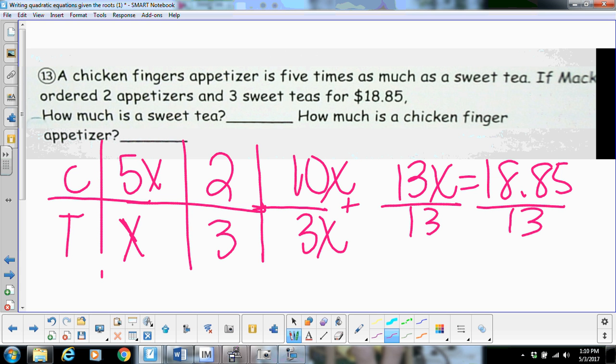And you're going to get x equals a dollar forty-five. So a dollar forty-five is going to be your sweet tea price. And then remember you have to multiply that times five to get your chicken finger appetizer price.